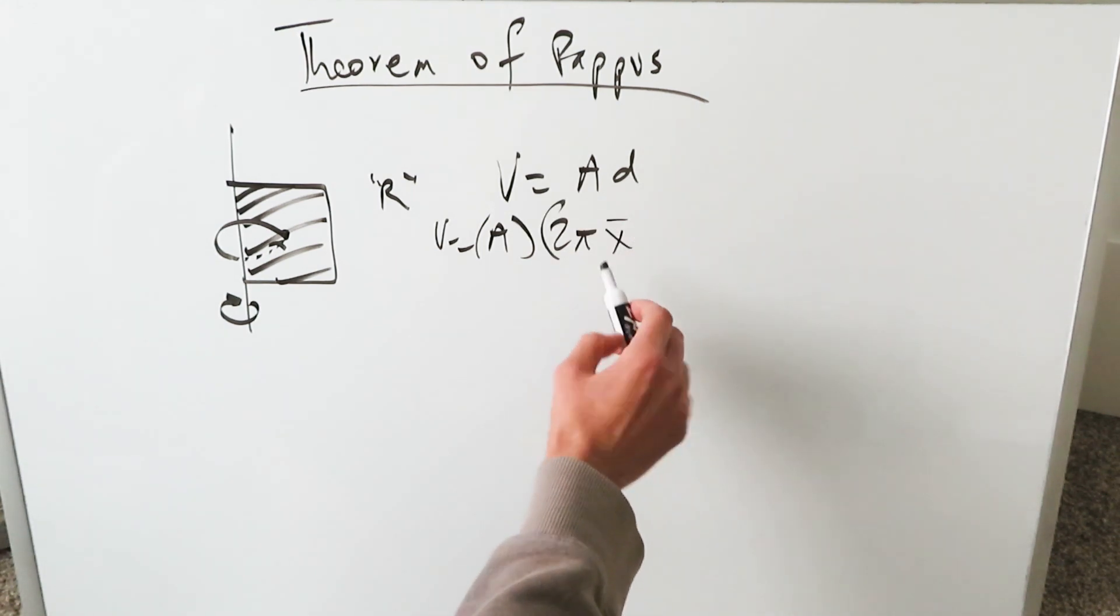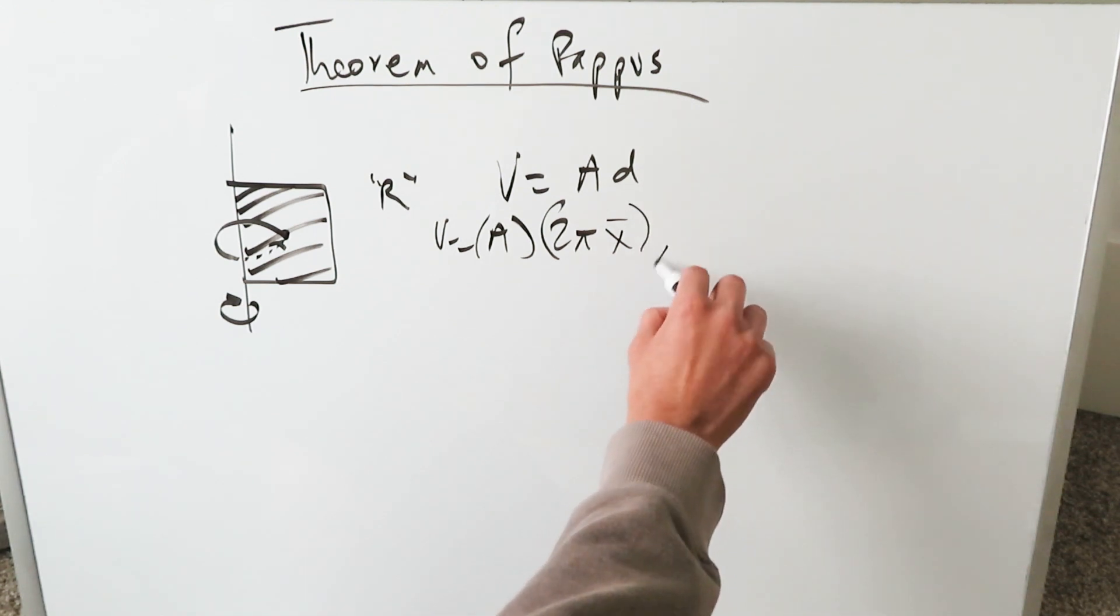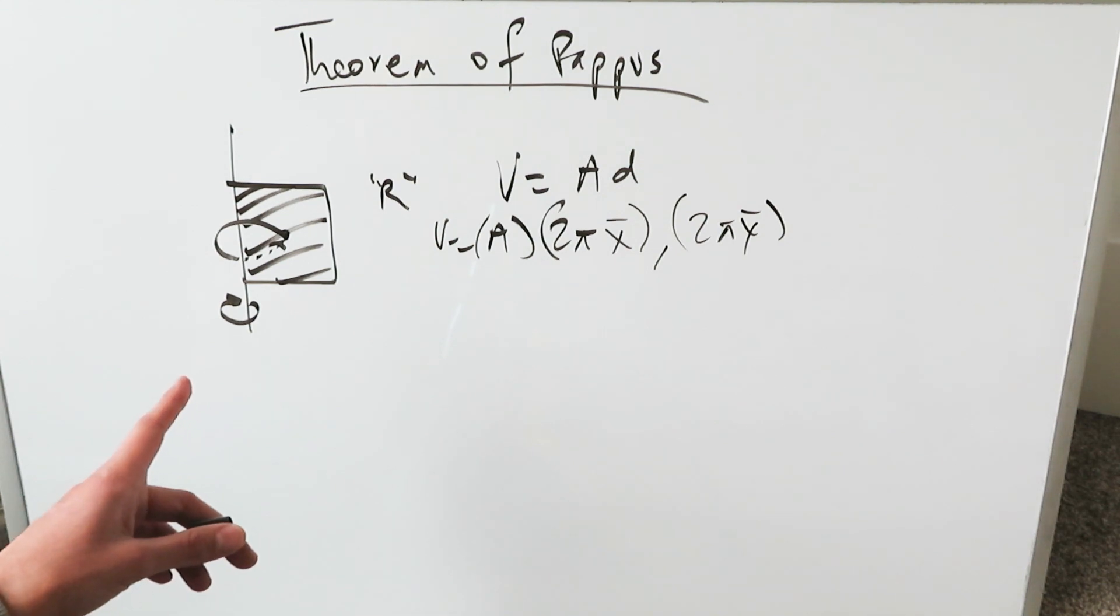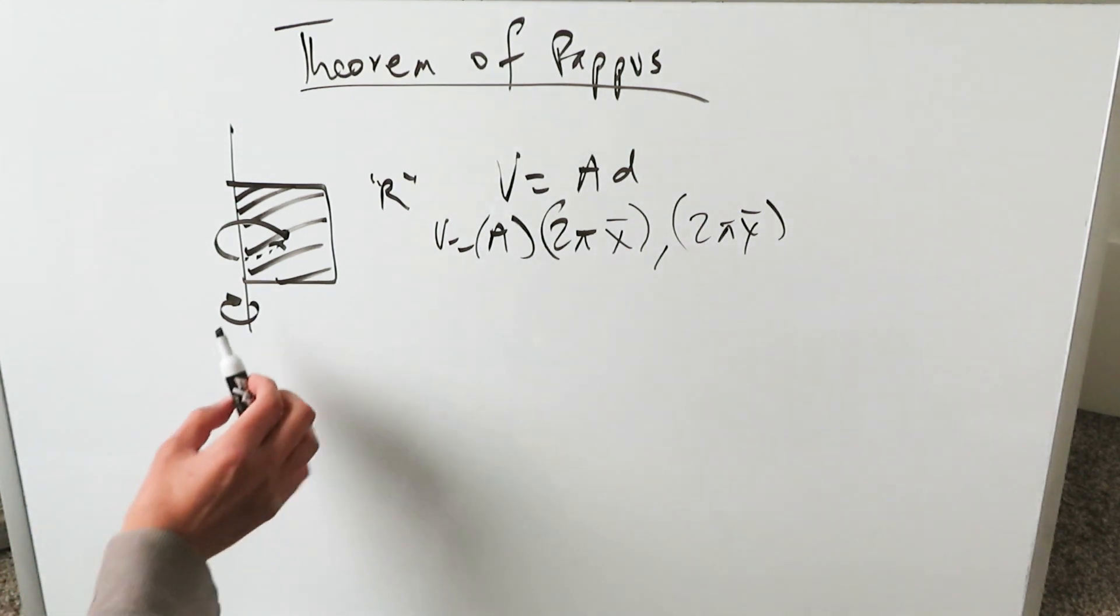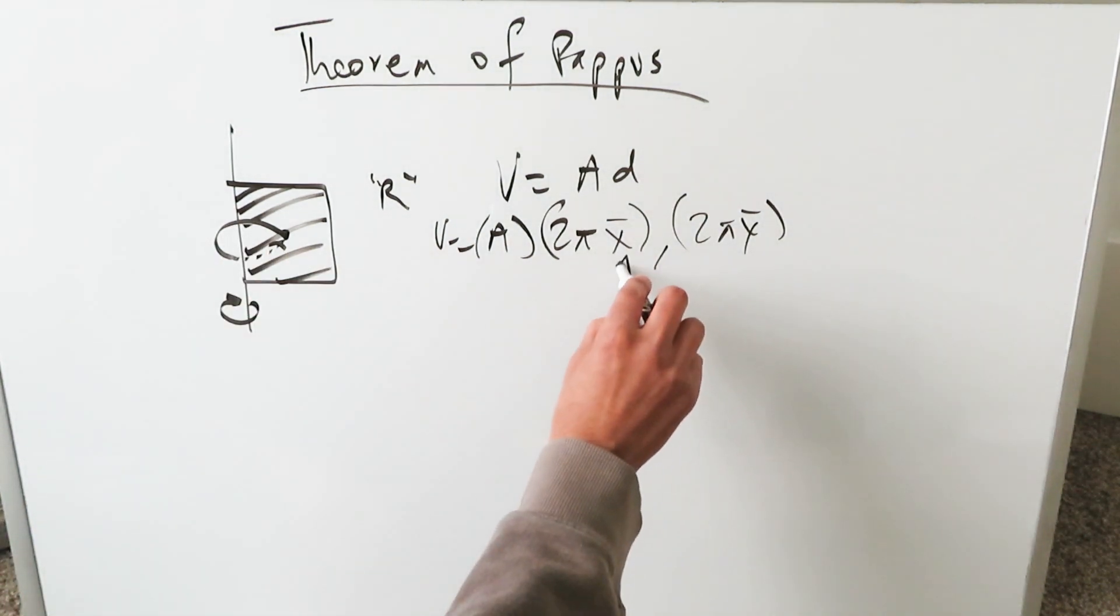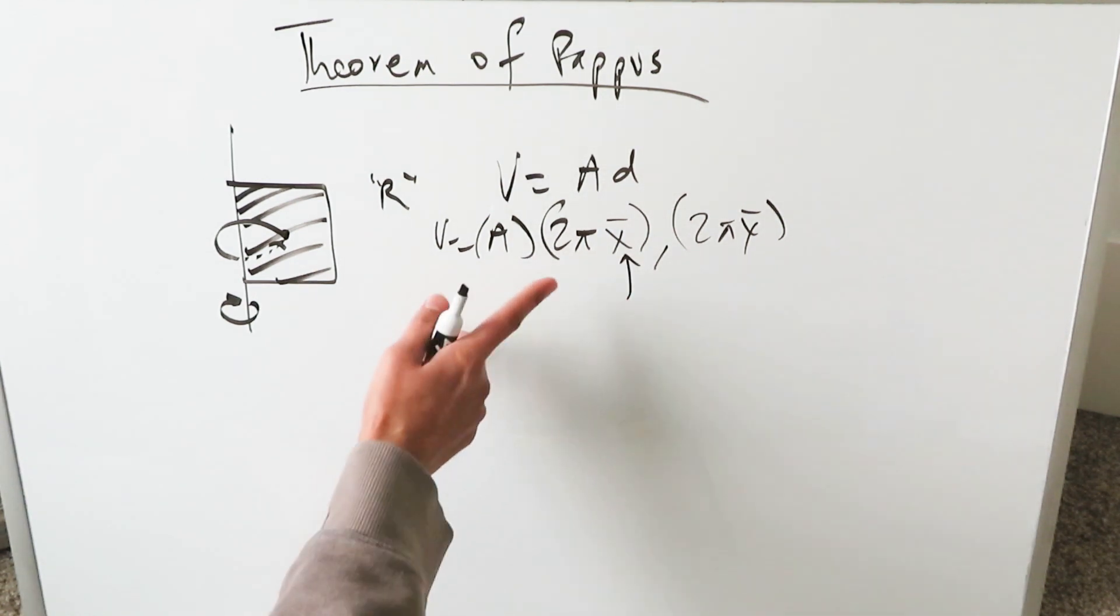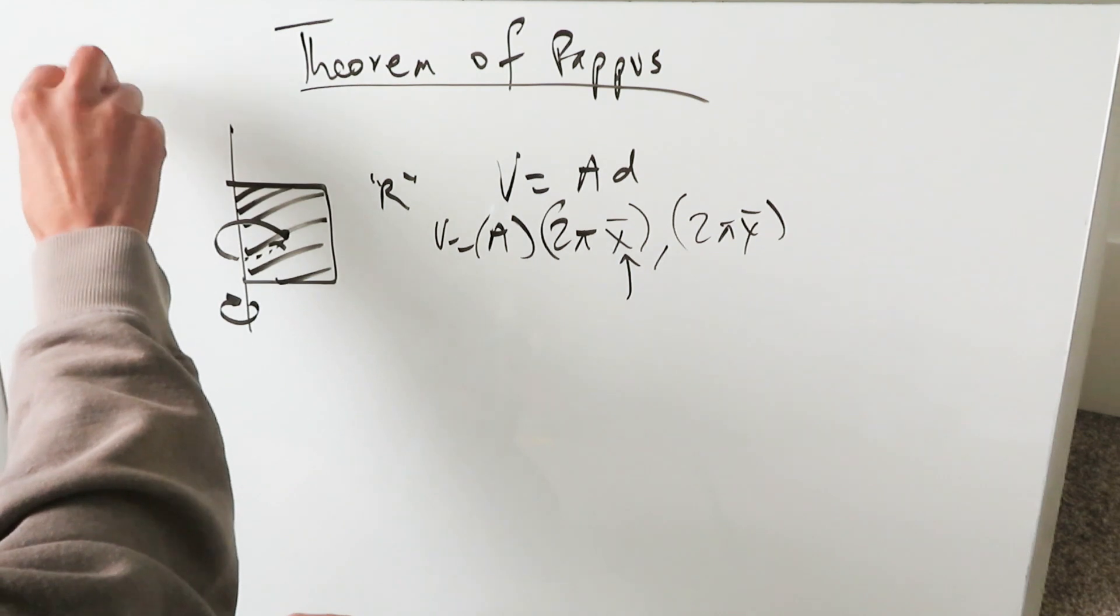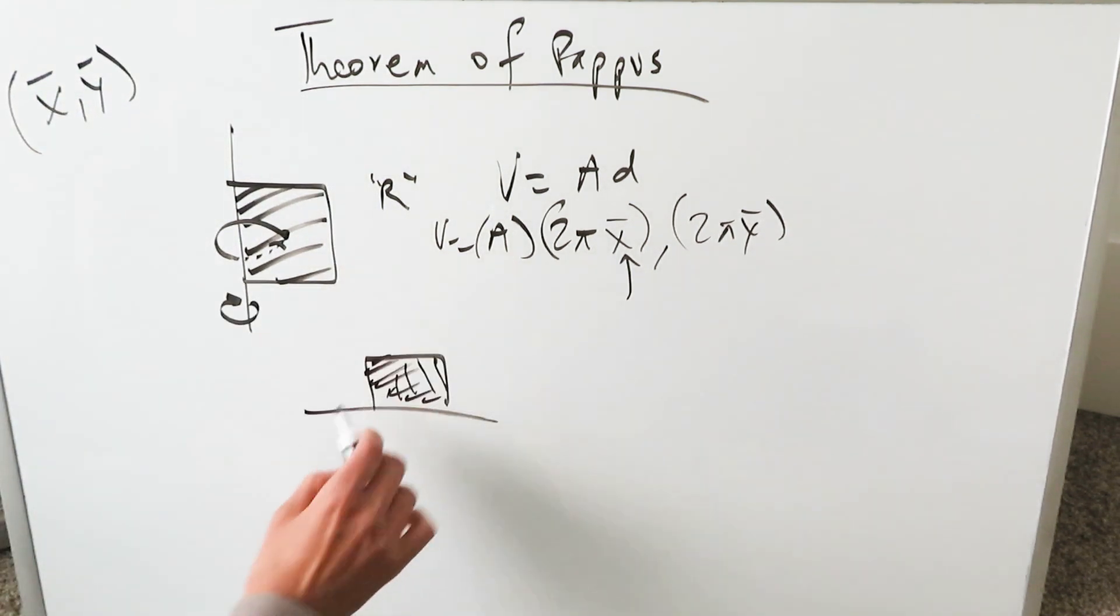It would be either an x̄ or it would be a ȳ value and that would depend on the line of rotation or the axis of rotation. When you have a vertical line of rotation, you'd be using an x̄ of your centroid. The centroid is made up of an x̄ and a ȳ. If you have a horizontal line of rotation, then you would be looking at the ȳ value.